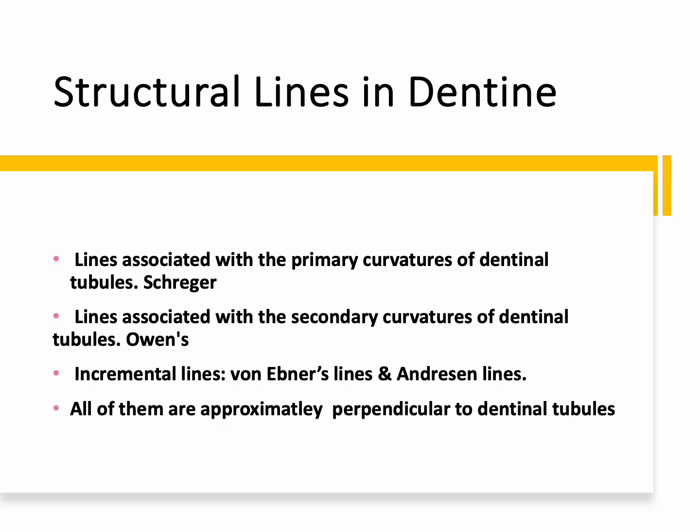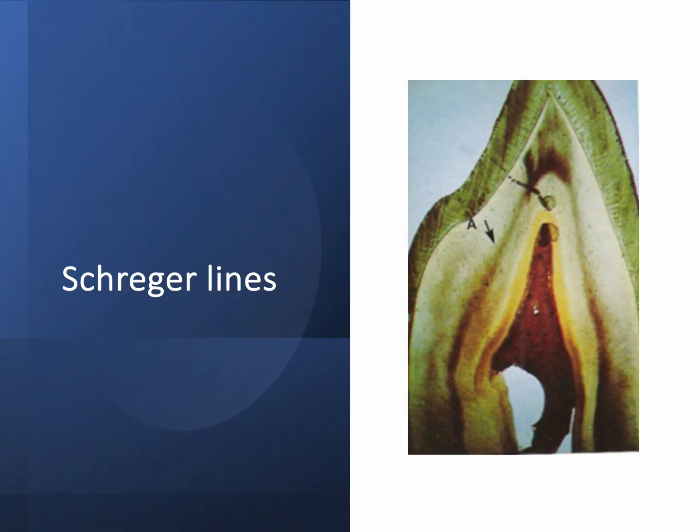Let's discuss the first line, called Schreger lines. Schreger lines are not easy to find in sections — if you find one, you are really lucky. The Schreger line is associated with the S-shape curvature.